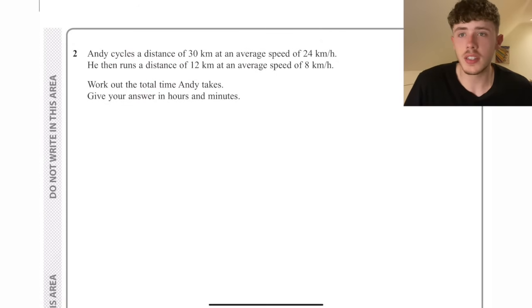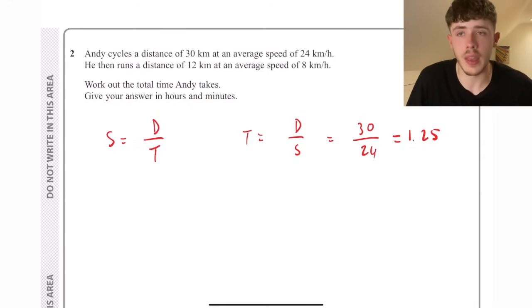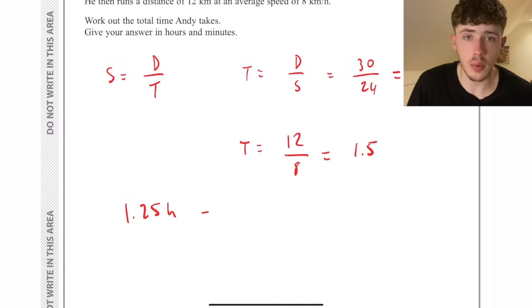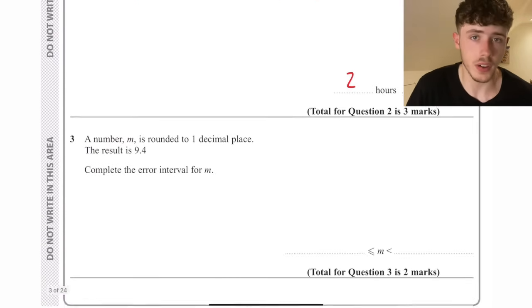Andy cycles a distance of 30 kilometres at an average speed of 24 kilometres an hour, then runs 12 kilometres at 8 kilometres an hour. Work out the total time Andy takes. We know speed equals distance over time, so time is distance over speed. We take 30 divided by 24, which gives 1.25. Then 12 divided by 8 is 1.5 hours, so an hour and a half. Adding those together gives 2 hours and 45 minutes.